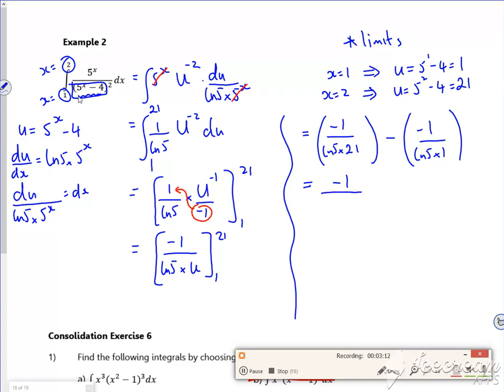A log 5 times 21, and then a minus 1 over log 5 times 1. So I've got minus 1 over, I'm just going to put the 21 at the front, 21 log 5. Minus a minus is a plus, 1 over log 5.